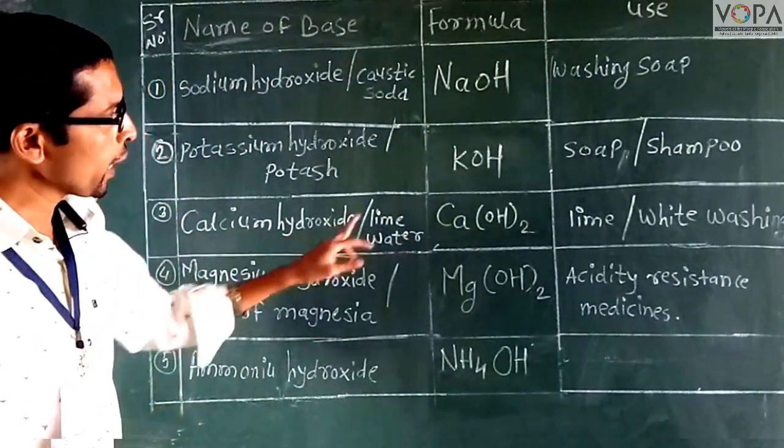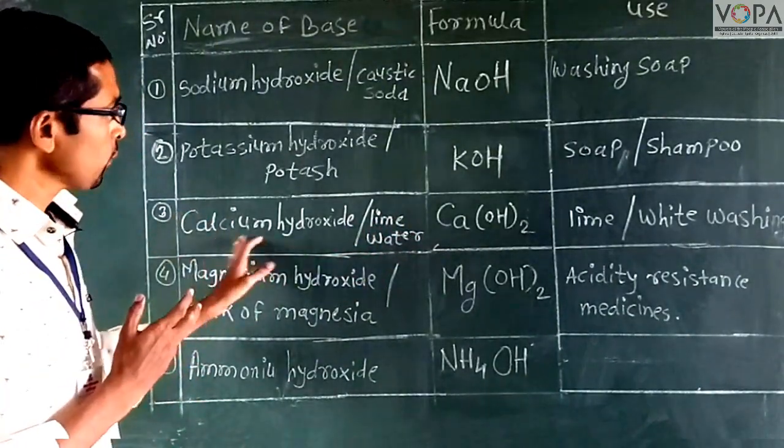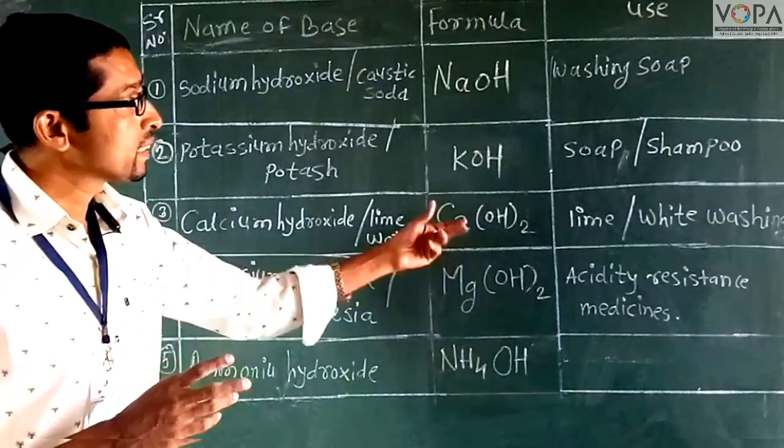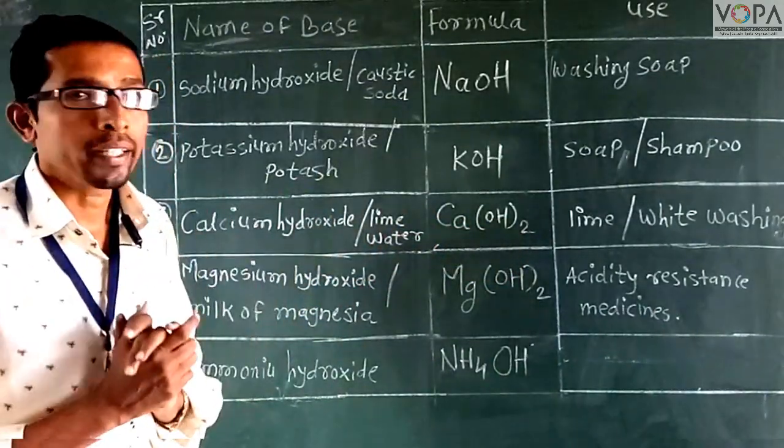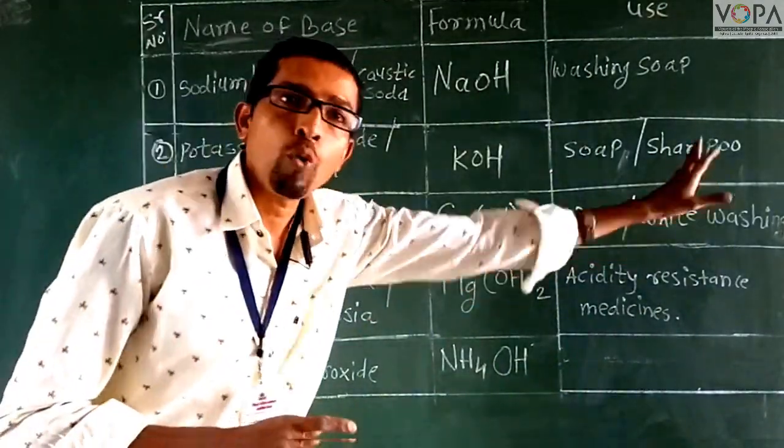Calcium hydroxide. The formula of calcium hydroxide is Ca(OH)2. The uses of this base include lime or whitewashing.